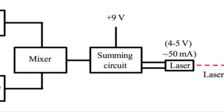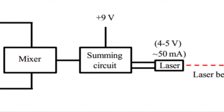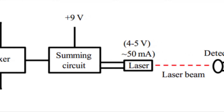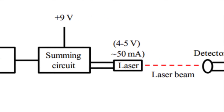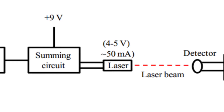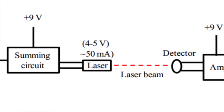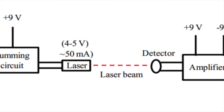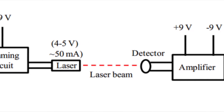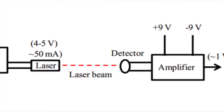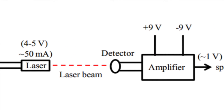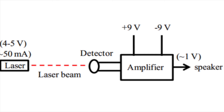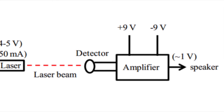The AC output from the mixer is coupled with a DC input through a summing circuit. This produces the necessary voltage and current levels for the laser diode, approximately 4–5 volts and 50 milliamps. The diode shines 50 feet away onto a photoresistor, where the signal is amplified to approximately 1 volt and then converted to sound through a speaker.